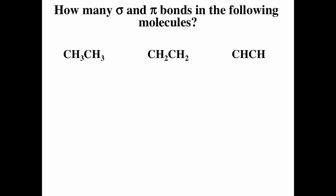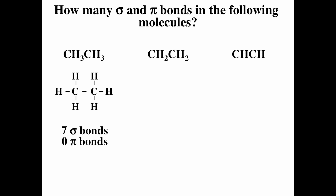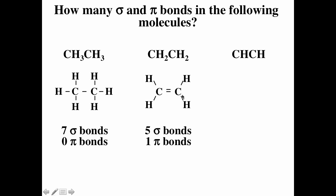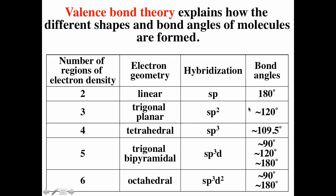You can determine the number of sigma and pi bonds in a molecule by thinking about the types of bonds. A molecule with only single bonds has all sigma bonds — for example, seven sigma and zero pi. A molecule requiring a double bond in its Lewis diagram has one sigma and one pi for that double bond, giving five sigma and one pi total. A molecule requiring a triple bond has sigma plus two pi for that bond, giving three sigma and two pi total. Valence bond theory explains how the different shapes and bond angles of molecules are formed, and how we go from atomic orbitals to the shapes described by VSEPR theory.